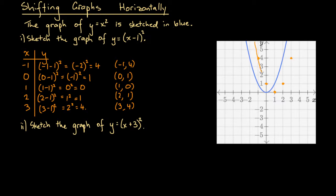So that's a hand sketch of the graph of y equals (x minus 1) squared. Interestingly, this parabola looks exactly like the original parabola, just shifted 1 unit to the right. And you might note that our original function is y equals (x minus 1) squared — we have the value 1 in the equation, and the graph is shifted 1 unit to the right. Is there some correspondence between this algebraic form and this graphical form?